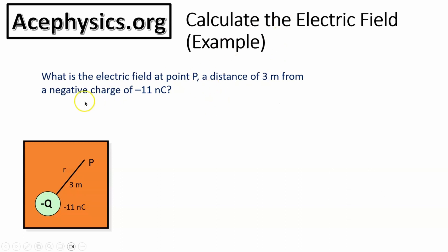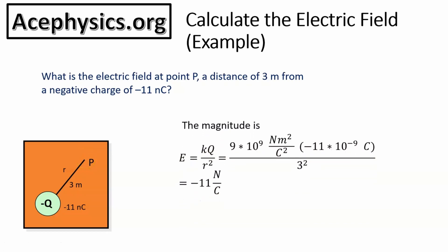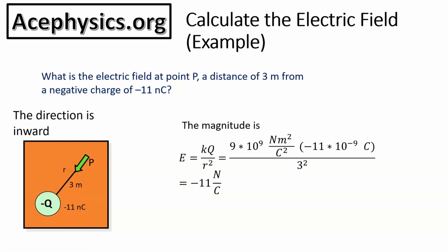Let's look at an example: what is the electric field at point P, a distance of 3 meters away from a negative charge of value negative 11 nanocoulombs? The formula is E = kq/r². k is always the same constant. q is the charge value: negative 11 × 10⁻⁹ coulombs. r is the distance from the charge to point P: 3 meters, so r² = 9. This gives an electric field magnitude of negative 11 newtons per coulomb. The negative value tells us the direction is inward toward the negative charge.